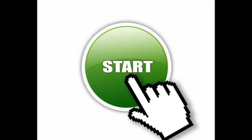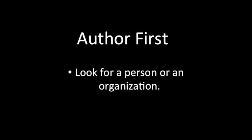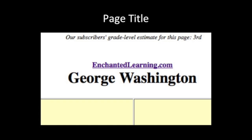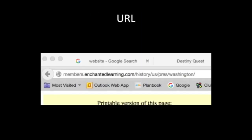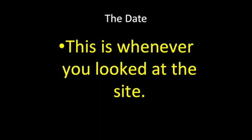So let's start. For these, you need the following. The author! FYI, these may be hard to find — it could be a person, it could be an organization. But remember, if you can't find it, just skip it. Then you need the page title — this might be different from the website name; look for the largest text on the page. Then you need the website name. Now here comes the hardest part: the URL, also known as the website address. And yes, you have to write the whole thing.